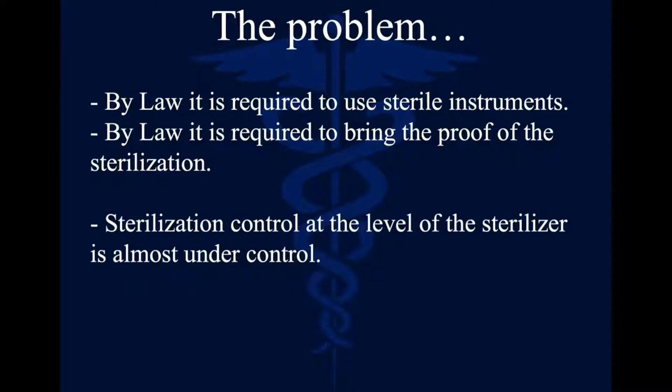This is done in two steps. The first step is the sterilization control at the level of the sterilizer — this is almost under control. For that, we need to do two things. First, we need to validate every year the quality of the sterilization, making the control and the validation of the sterilizer. What can also be done every day in the morning, before we start using the sterilizer, we validate the sterilization process.